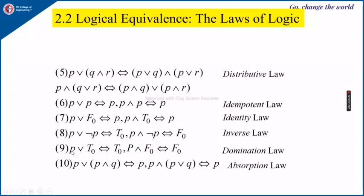Next is the domination law: P OR true is always true, since if one operand in OR is true the result is always true. And P AND false is always false, since if one operand in AND is false the result is always false. When using AND, the falsity dominates P; when using OR, the tautology dominates P. Next is the absorption law: P OR (P AND Q) is equivalent to P, and P AND (P OR Q) is equivalent to P. Q is absorbed in both cases, giving the result P.